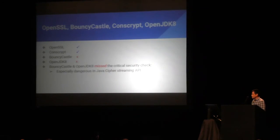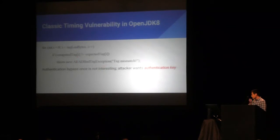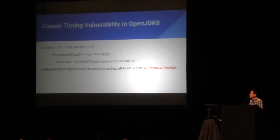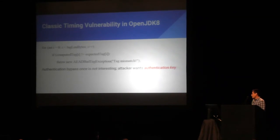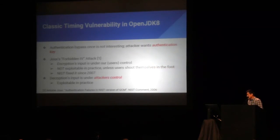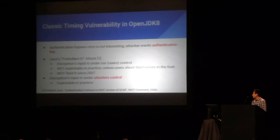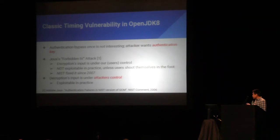The last bug I'll discuss is a classic timing vulnerability in OpenJDK. It looks similar to the HMAC timing vulnerability — basically it compares byte by byte and throws an exception on the first mismatch. This allows bypassing authentication for a particular ciphertext, but I wanted more — I wanted the authentication key. Let me remind you of the Anton Zhu forbidden IV attack. That attack works only when encryption input is under user control, and is not exploitable in practice — NIST already fixed it in 2007. But the key reminder is: decryption input is under attacker control. Let's see how it can be exploited.